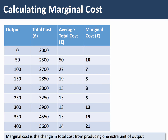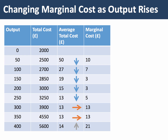Marginal cost is the change in total cost from producing one extra unit of output. Notice in this calculation: as we move from output zero to 50, our total costs go up by 500, so the marginal cost of each of those extra 50 units is 10 pounds per unit. If you perform the same marginal cost calculation throughout the table, you'll notice that marginal cost initially declines up to the output level of 200, but beyond that level the marginal cost starts to rise.